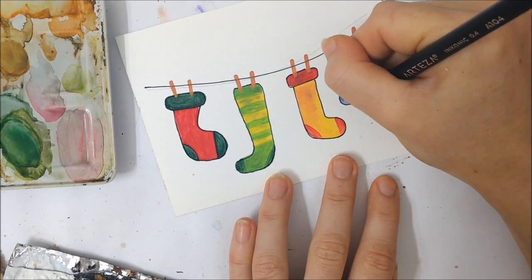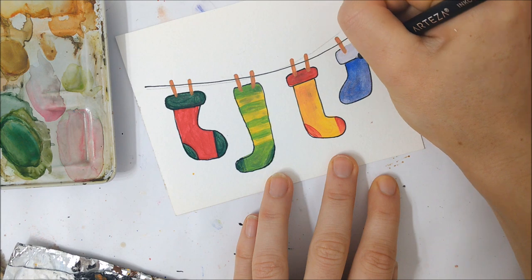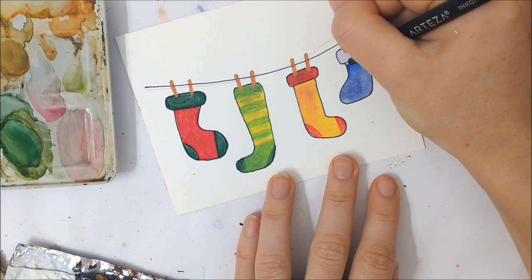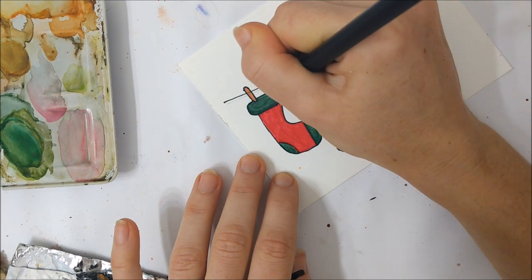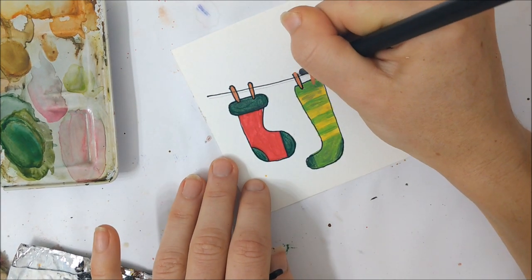This next step is completely optional, but I think it makes the whole thing look a lot more fun and even animated. You can take a black fine tip marker or a black pen and outline all of your socks and all of the clothespins.